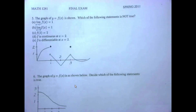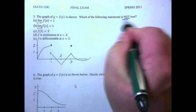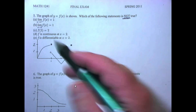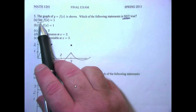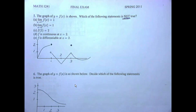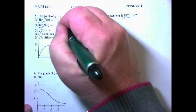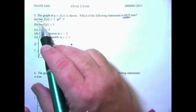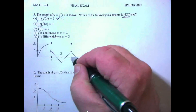Part two, problem five: the graph of y equals f of x is shown. Which of the following is not true? This type of question requires you to evaluate every answer choice. Checking answer A: the limit as x approaches one from the positive side — going from the right, the functional value is one, so that checks out as true. Checking answer B: the limit as x approaches three — the limit from the left approaches one, and from the right the function also equals one, so both one-sided limits are equal.